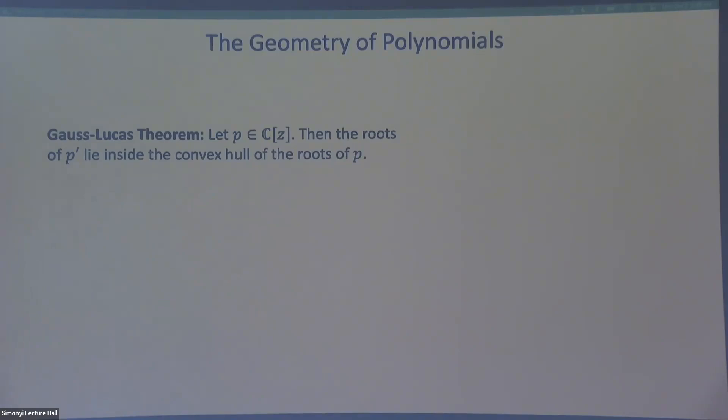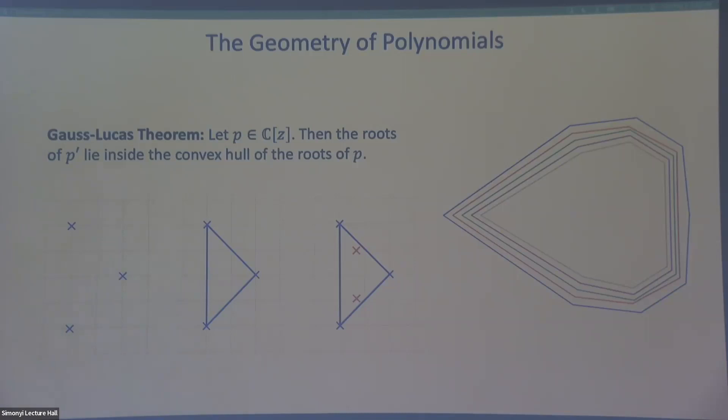So the Gauss-Lucas theorem is, let p be a univariate complex polynomial. Then the roots of its derivative lie inside the convex hull of its roots. So if I have some polynomial p, say it has degree three, so it has three roots in the complex plane, then if I draw the convex hull of these roots, I'm guaranteed that the roots of the derivative of p lie inside this convex hull. So let's say I have a polynomial of degree 20, but this means I can kind of keep differentiating and I'll get this series of convex hulls that should lie inside of one another.